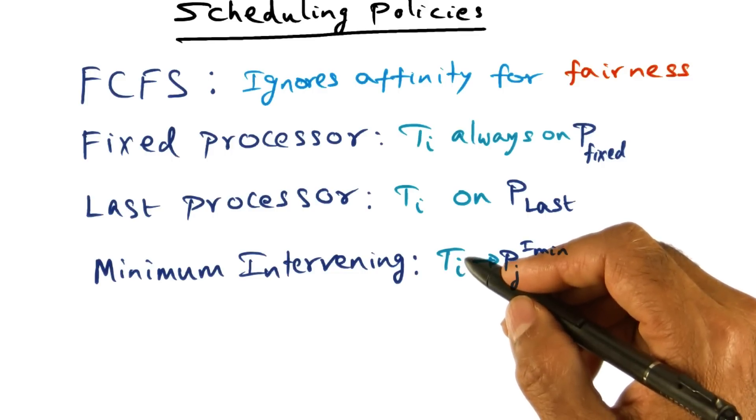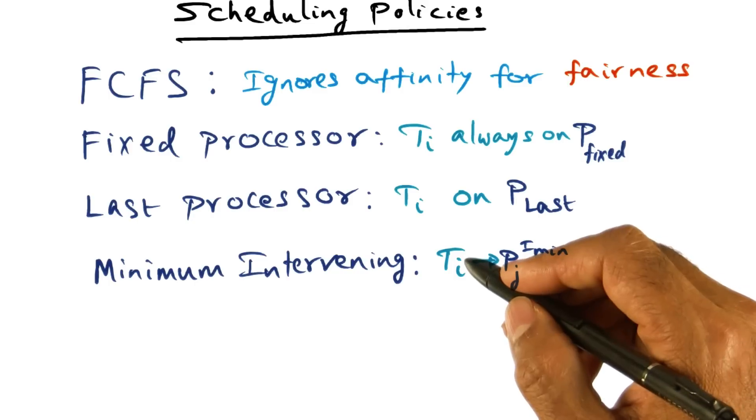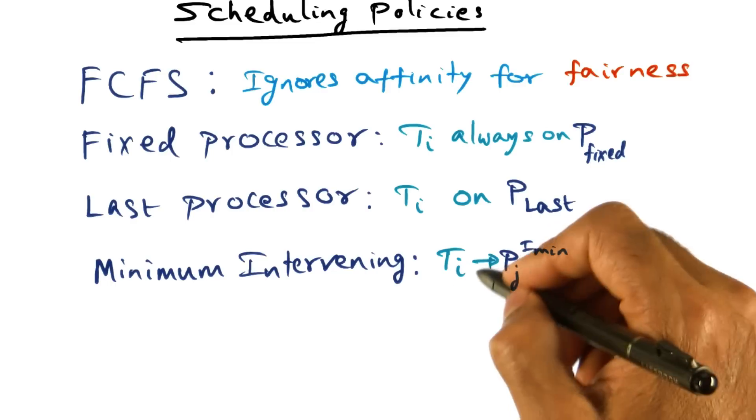For every processor that is available in the multiprocessor, I need to keep this affinity index for this thread. That may be too much metadata that the scheduler has to maintain on behalf of every thread.